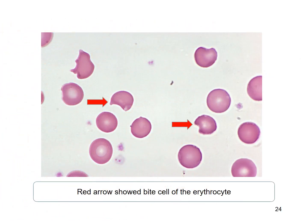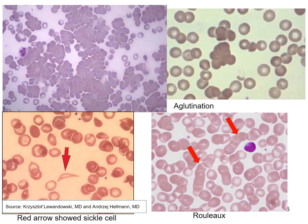See, these are bite cells. The top picture shows agglutination, the left bottom picture shows sickle cells, and the right bottom shows rouleaux formation.